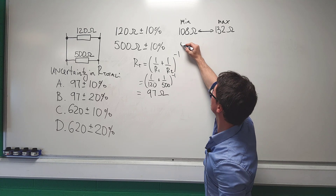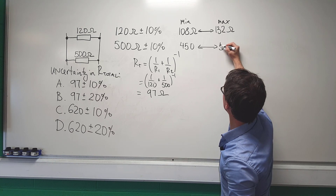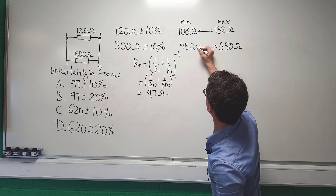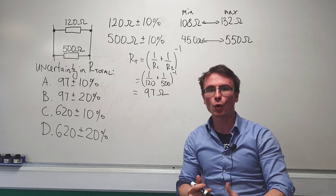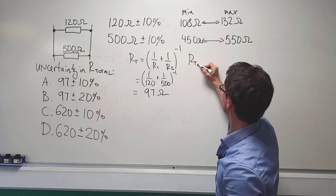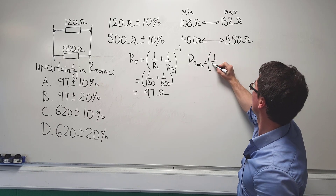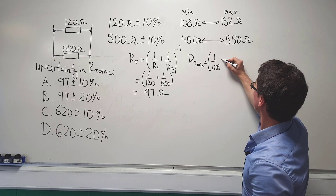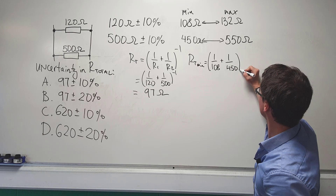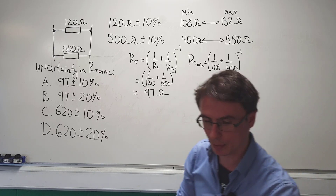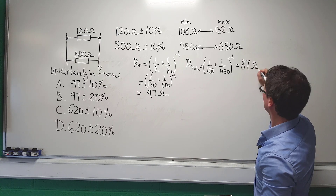500 ohms plus or minus 10% gives us a minimum value of 450 ohms. Now let's calculate the minimum total resistance. RT minimum equals (1/108 + 1/450) to the power of negative 1, which is approximately 87 ohms.